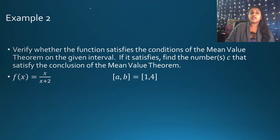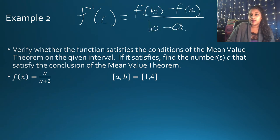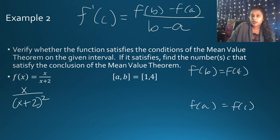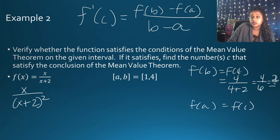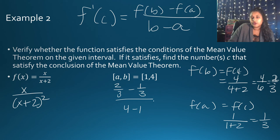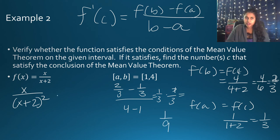Since it's continuous and differentiable, F'(C) = [F(B) - F(A)] / (B - A). F'(X) = 2/(X+2)². F(4) = 4/(4+2) = 4/6 = 2/3. F(1) = 1/(1+2) = 1/3. So the average rate of change is (2/3 - 1/3) / (4 - 1) = (1/3) / 3 = 1/9. Setting these equal: 2/(X+2)² = 1/9.